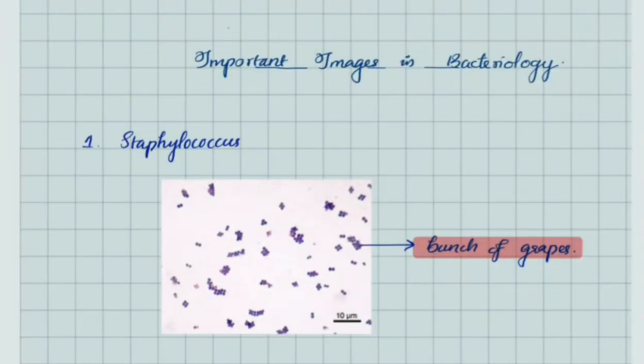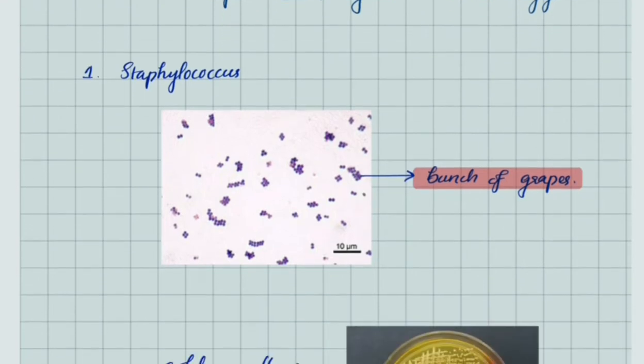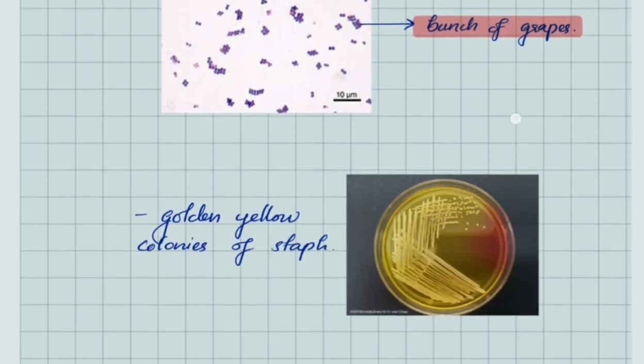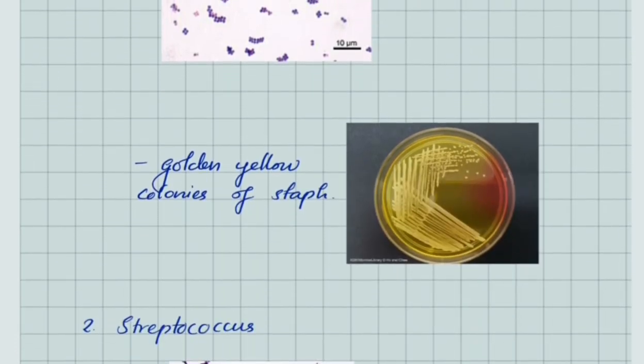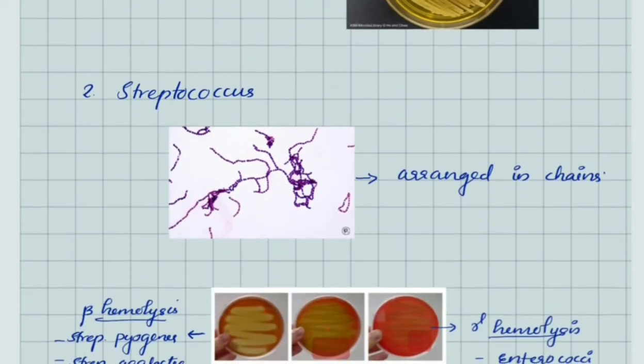Hello friends, welcome back to our channel. Here we're discussing the important images in bacteriology. Let's start a rapid revision through the images of bacteriology. First, Staphylococcus in Gram stain shows bunch of grapes arrangement. Next, nutrient agar growth shows golden yellow colonies of Staph aureus.